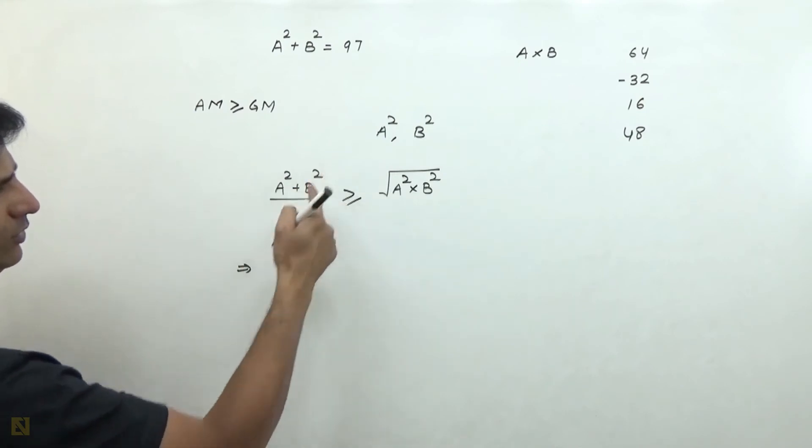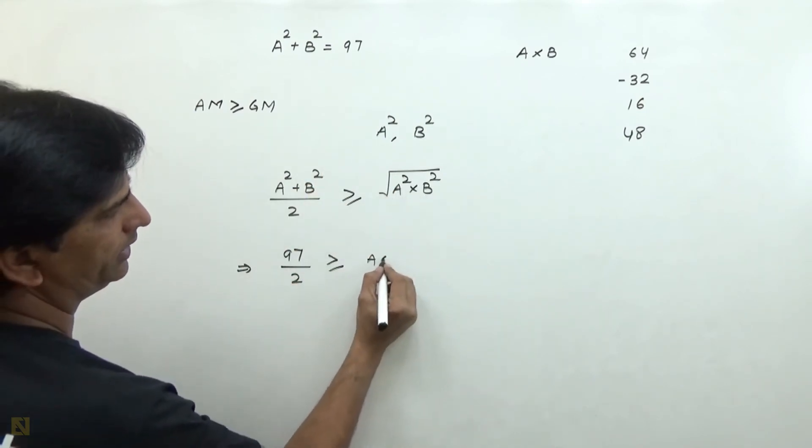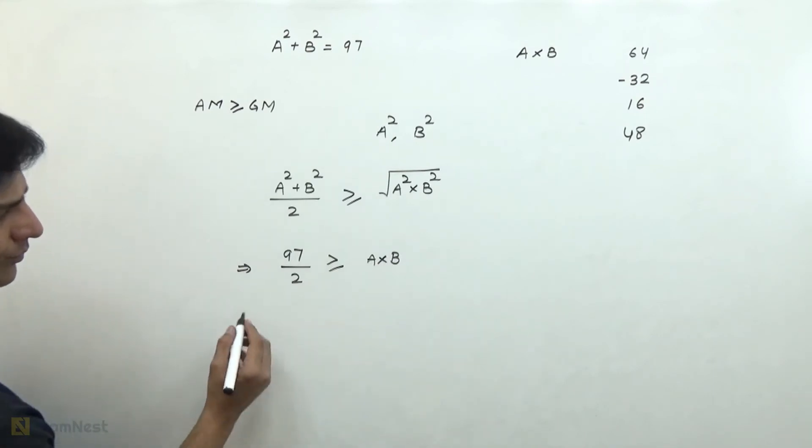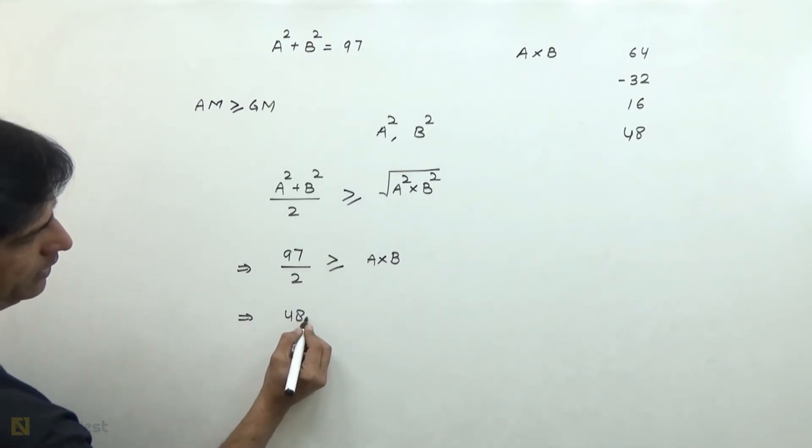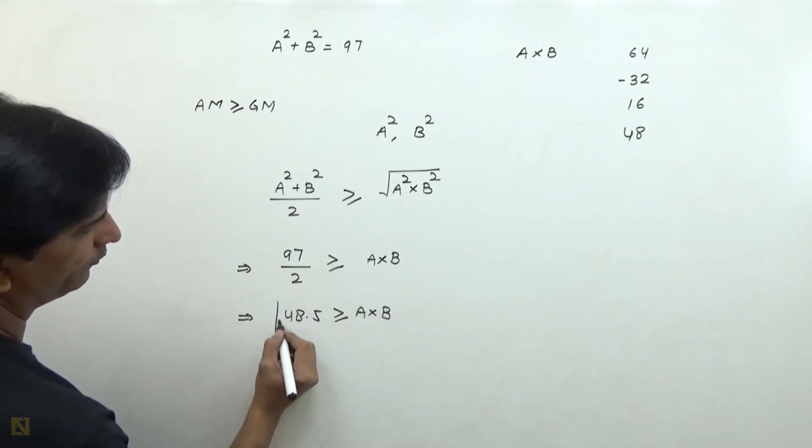So this value is greater than or equal to A into B. That means, A into B, therefore it will not be equal to 48.5.